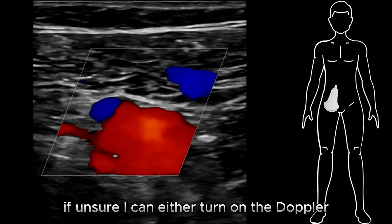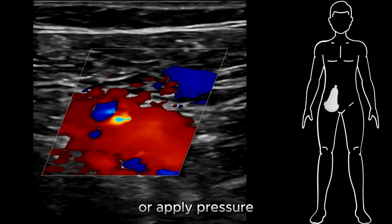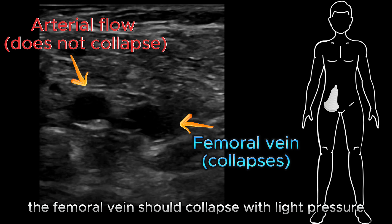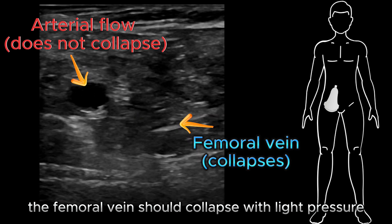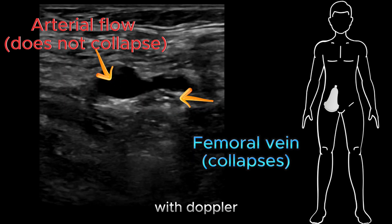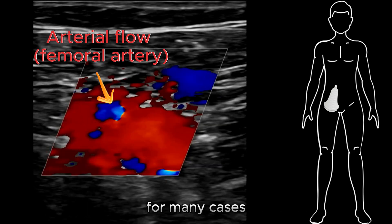If unsure, I can either turn on the Doppler or apply pressure. The femoral vein should collapse with light pressure, but not the femoral artery. With Doppler, you can see if there is arterial flow or not.